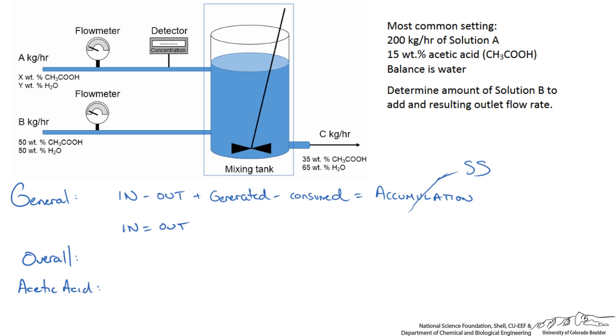Our overall balance: we are told that our flow rate is 200 kg of A per hour plus the flow rate of B which is something we are looking for. What leaves is our stream flow rate of C.